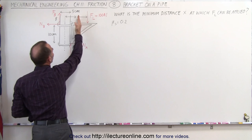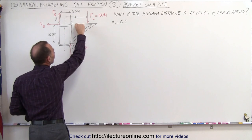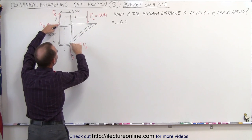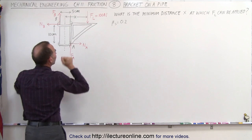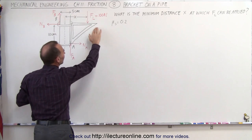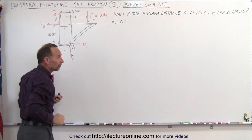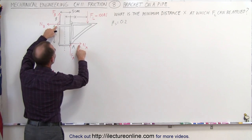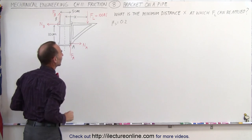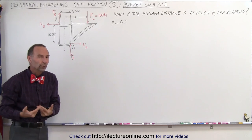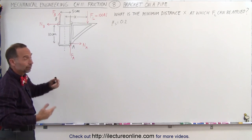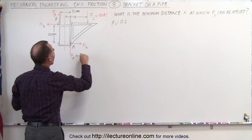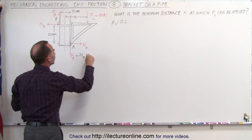Now, the closer we bring the load to the pipe here, the less torque we're going to have and the less friction we create between the two rings and the pipe. The farther away the load is, the greater the torque, the greater the friction. Because the greater the torque, the greater the normal forces you're going to have on the bottom and the top ring. And of course, the greater the normal force, the greater the friction force, because by definition, the friction force is equal to the normal force times the coefficient of friction.